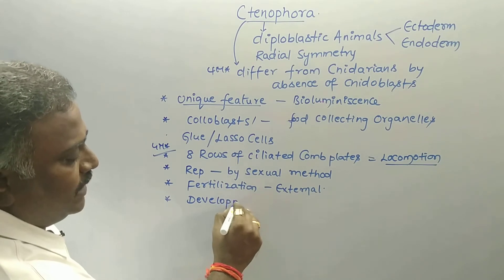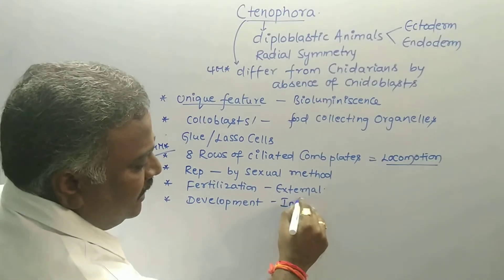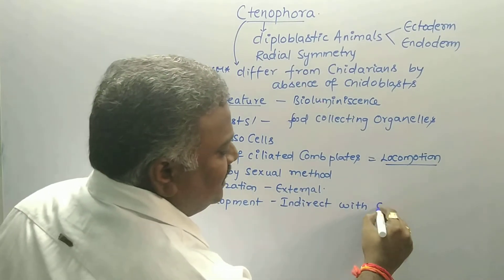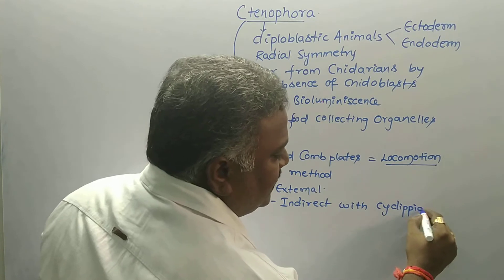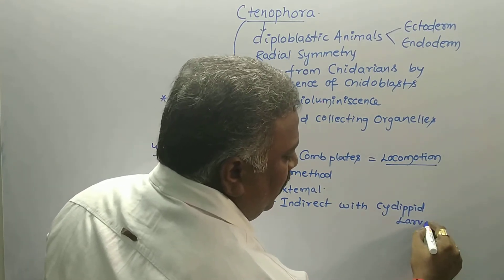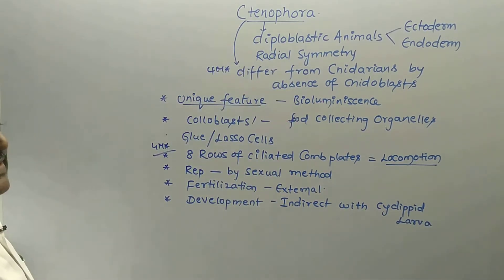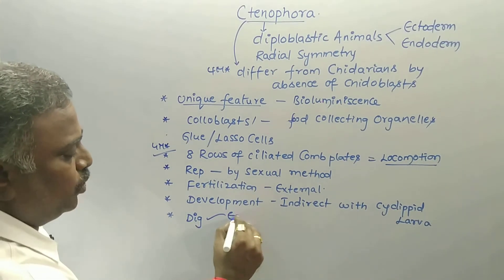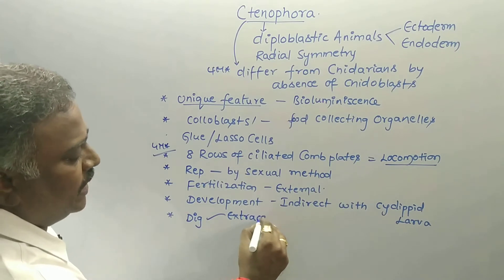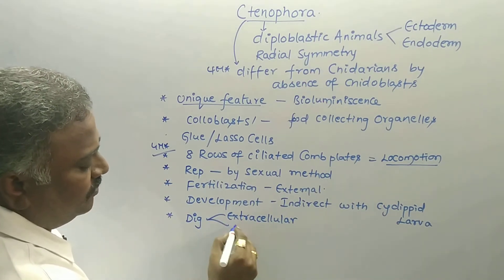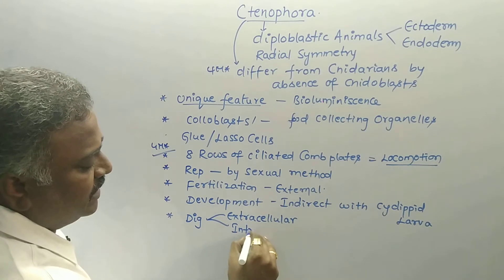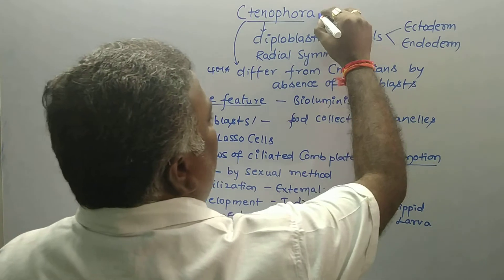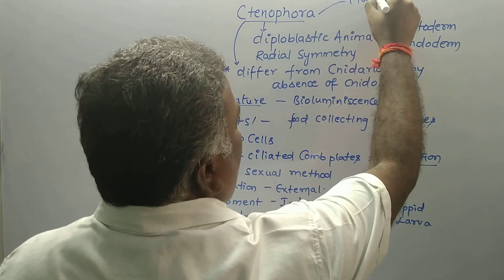Development in Ctenophores is indirect, meaning it involves larvae — specifically ciliated larvae. Digestion is said to be both extracellular and intracellular.